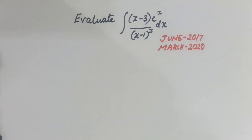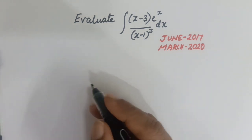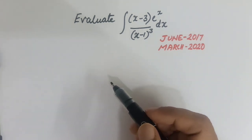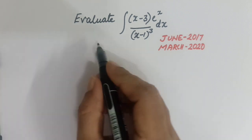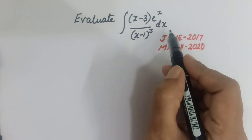Welcome back. We'll solve a problem from Chapter 7 on integrals. This question appeared in 2017 and again in 2020, so it has been repeated twice. It carries three marks and comes from Part C. The question is to evaluate the integral of (x minus 3) divided by (x minus 1) cubed, multiplied by e raised to x, dx.